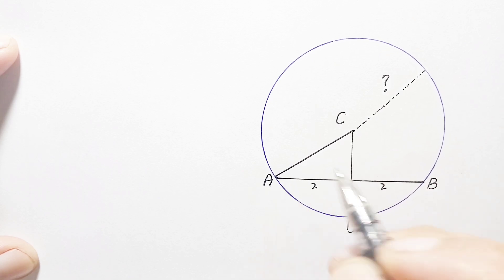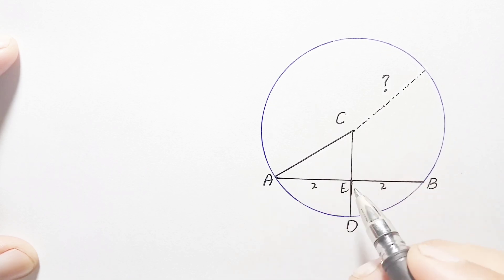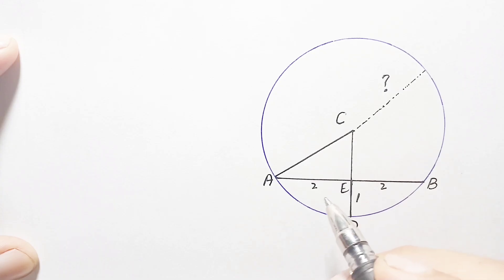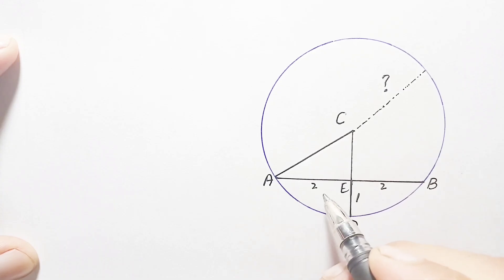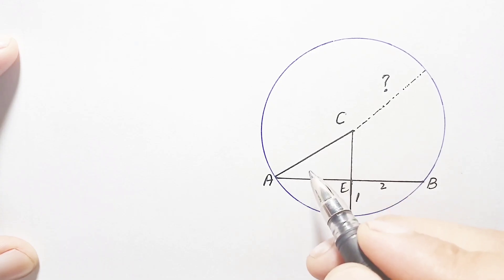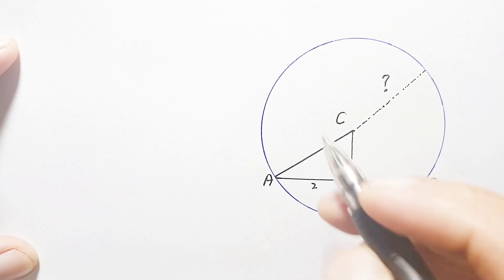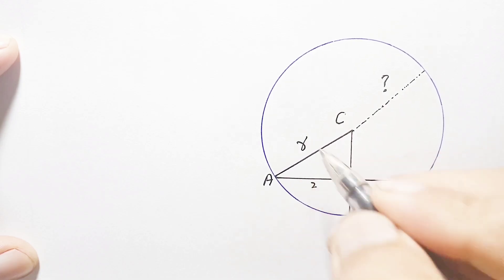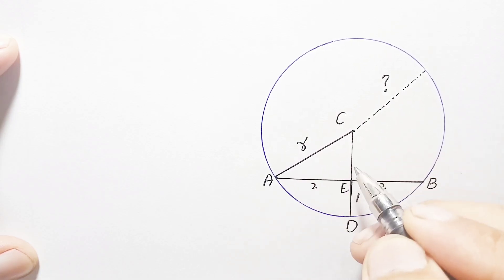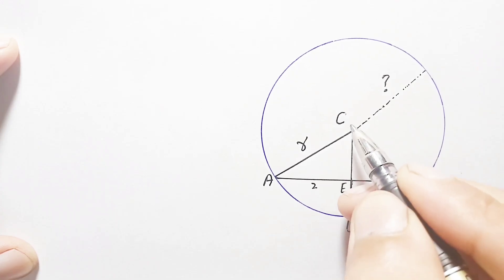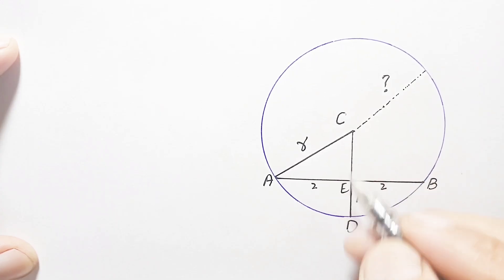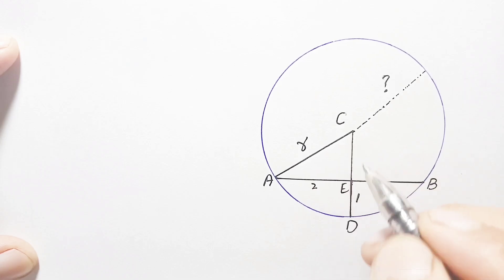Now look at right angle triangle ACE. This is a right angle triangle where the length of AE is two units, and AC is the radius of the circle, so AC equals r units. The length ED is one unit, and CD is the total radius, so segment CE will be r minus one units.